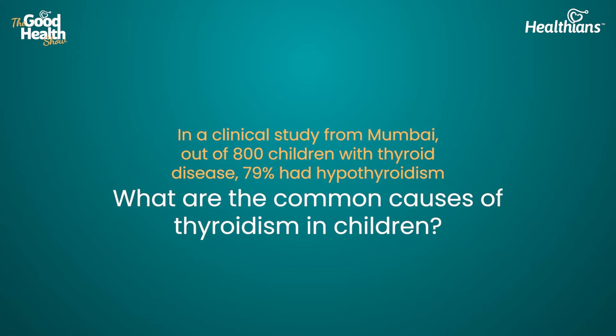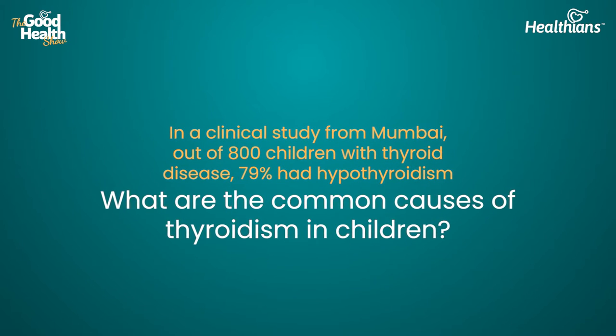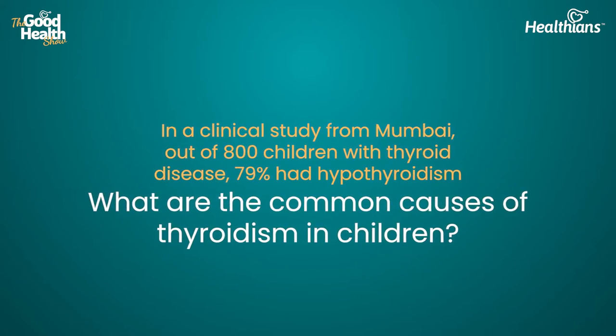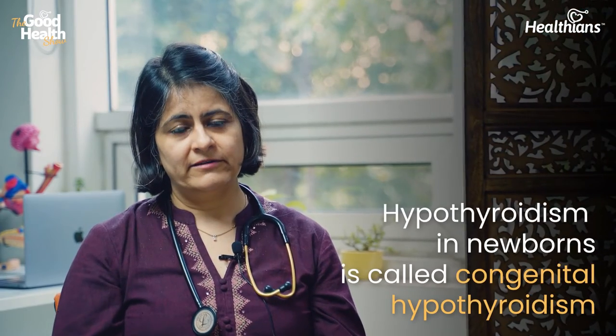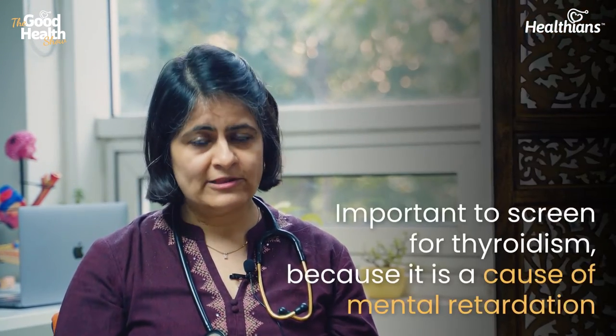In a clinical study from Bombay, out of 800 children with thyroid disease, 79% had hypothyroidism. The common causes of hypothyroidism in children vary by age: in newborns it is called congenital hypothyroidism, while in the adolescent age group it is mostly due to autoimmune hypothyroidism.